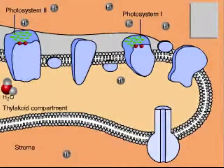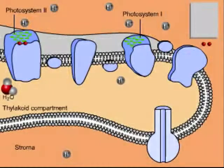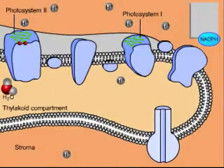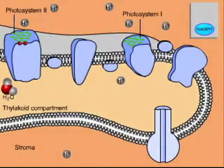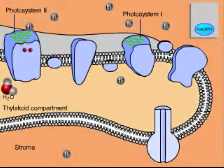Energized electrons from photosystem 1 are passed down an electron transport chain and added to NADP+ to form NADPH. Meanwhile, energized electrons from photosystem 2 are passed through another electron transport chain.